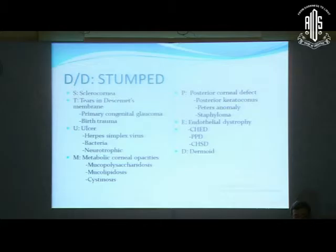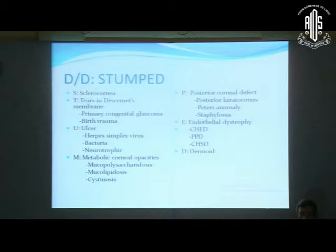S stands for sclerocornea. T stands for tears in Descemet's membrane — this could be due to primary congenital glaucoma, known as Haab's striae, or due to birth trauma. U stands for ulcer, which could be herpes simplex, bacterial, or neurotrophic. M stands for metabolic corneal opacities: mucopolysaccharidosis, mucolipidosis, and cystinosis.